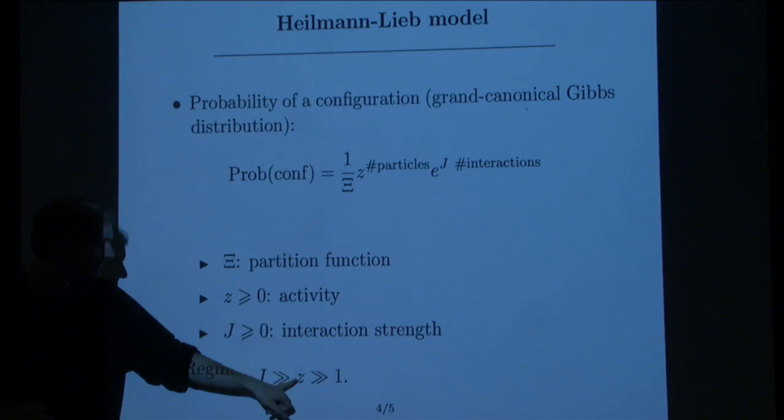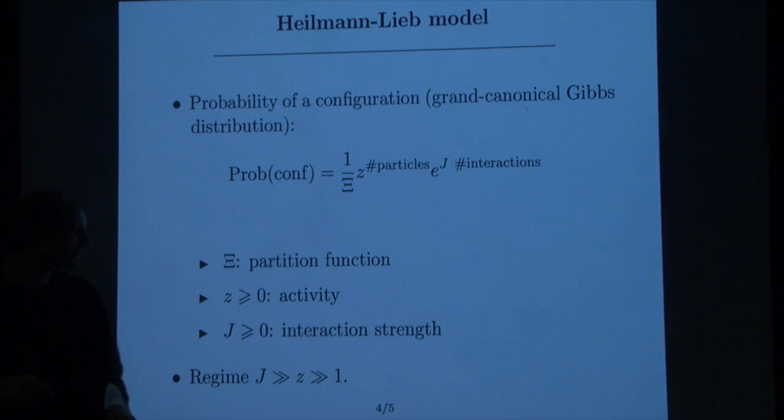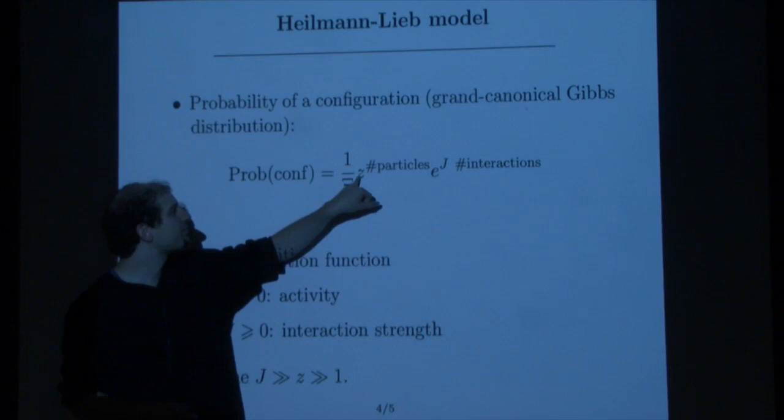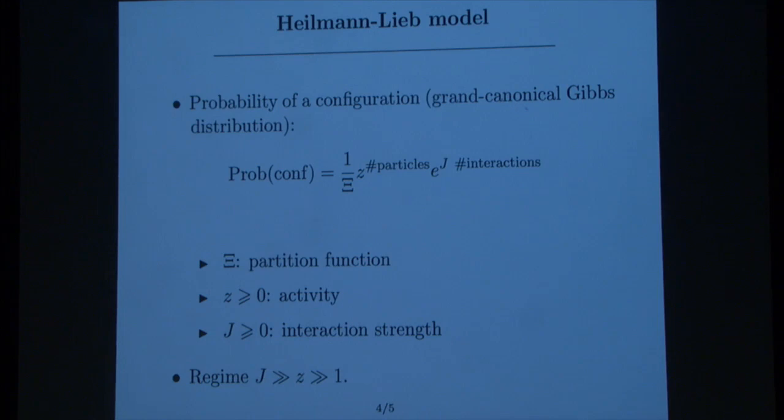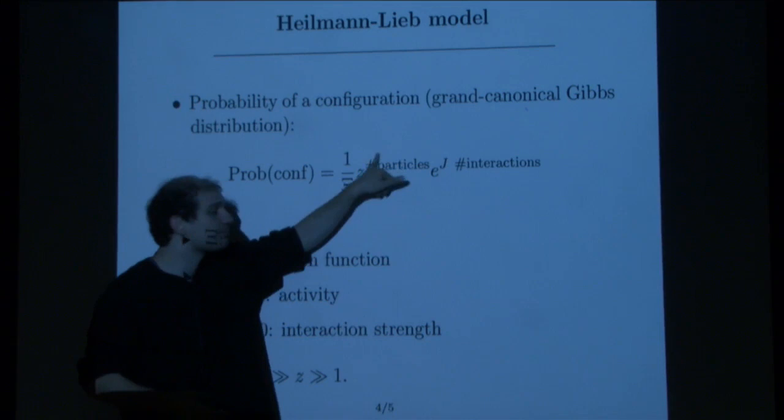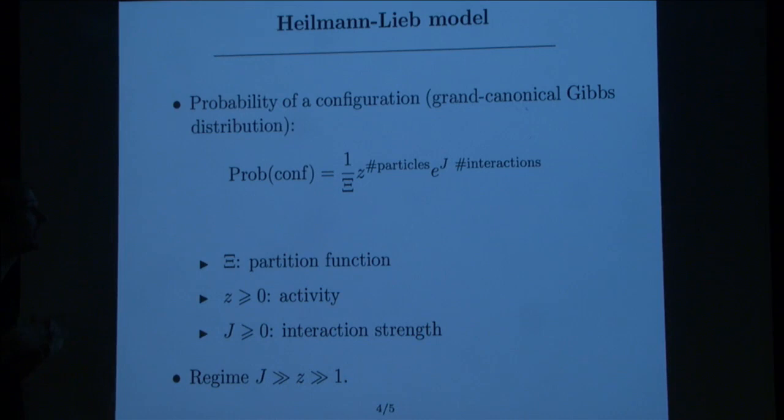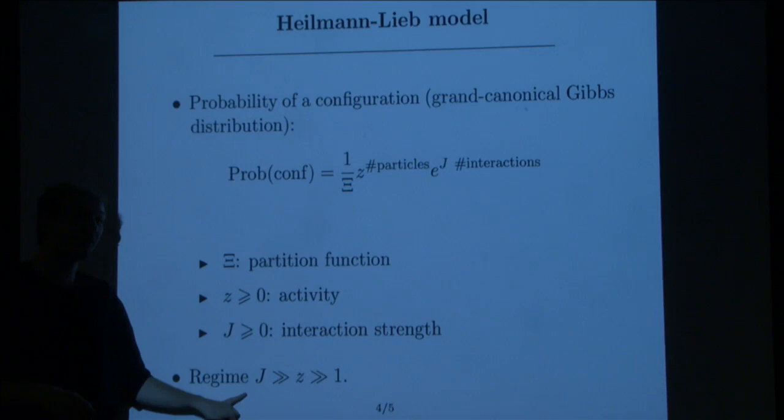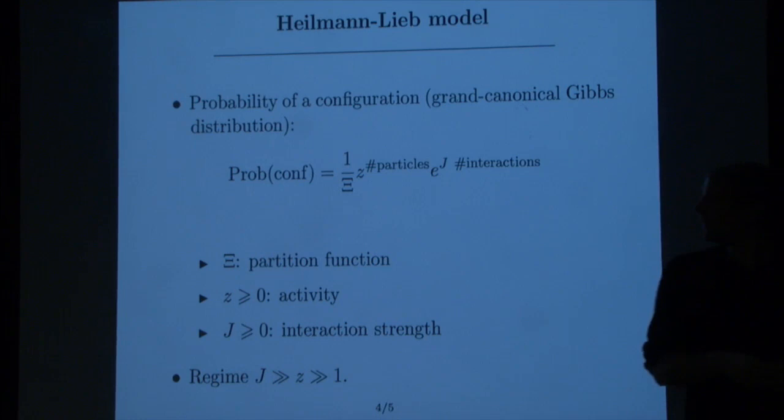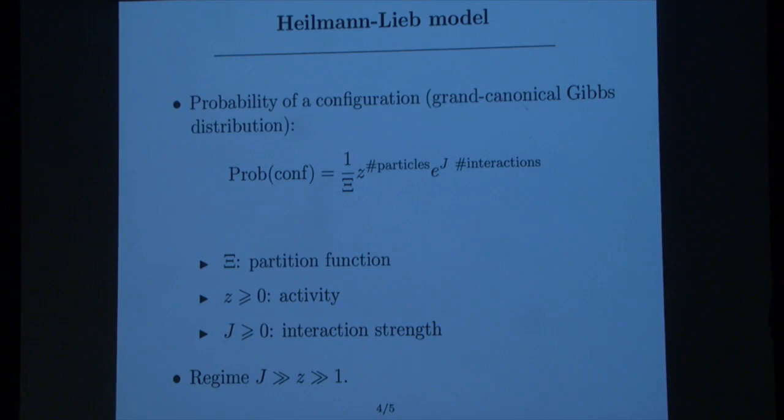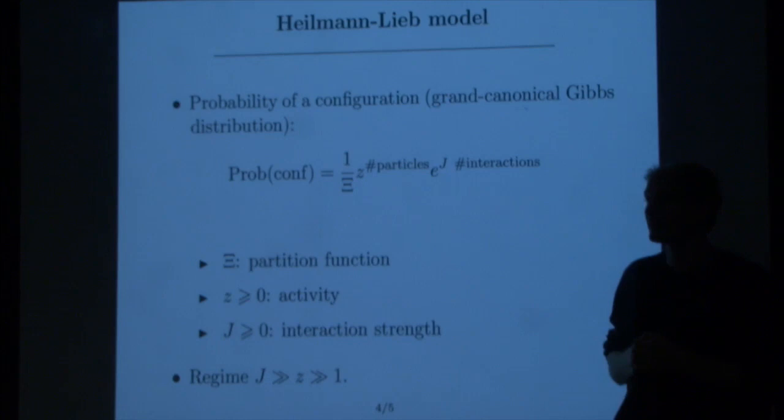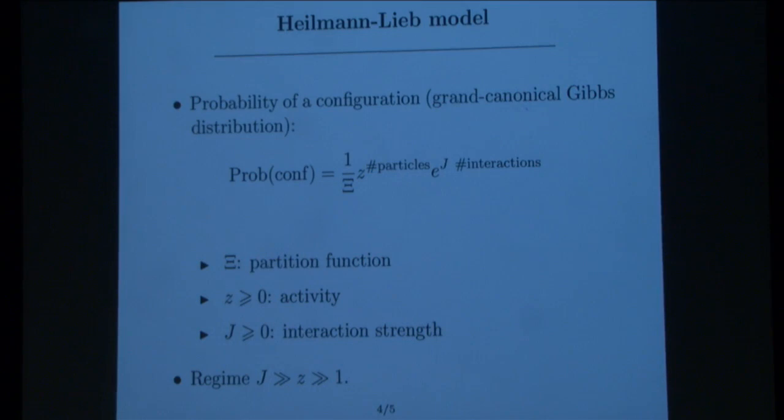So this is the probability distribution that I would like to study. And specifically, in order to have a liquid crystalline phase, I want to focus on a regime of parameters that is such that the activity is large and the interaction is large. So let me give you an intuitive picture of what this means. If the activity is large, since my probability is proportional to the activity to the number of particles, this means that I'm going to give a larger weight to configurations that have many particles. If I have lots of particles, then z to the number of particles will be larger. And so the probability of those configurations will be higher. Similarly, I'm also going to take the interaction strength to be large. In fact, for technical reasons, it has to be larger than the activity. And this means that the probability of a configuration in which I have lots of interactions, lots of events where my dimers are adjacent and belong to the same row or column, are favored. That's the regime that I'm interested in.